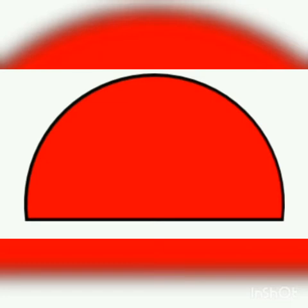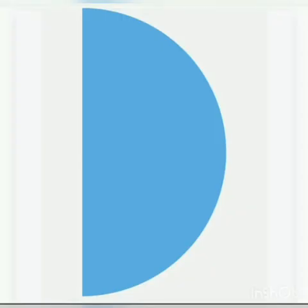Semi-circle. A semi-circle is half a circle formed by cutting a whole circle into two parts. The spelling of semi-circle is S-E-M-I-C-I-R-C-L-E. Semi-circle.